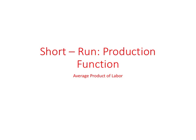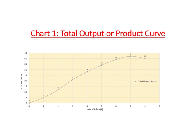We have been trying to understand the short-run production function. In the previous video, we looked at productivity of each worker as if by name, and we call this marginal product of labor. We also saw that initially when the firm starts to hire workers, we observe the law of increasing marginal product of labor, and then as we hire more and more workers, the law of diminishing marginal product of labor sets in.